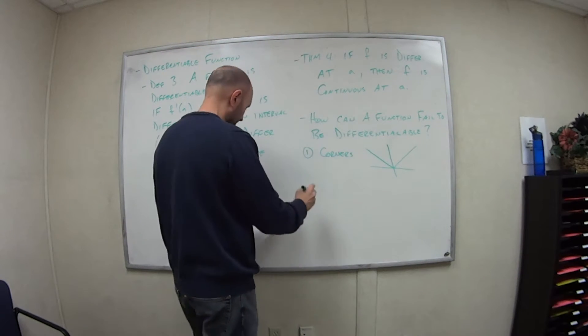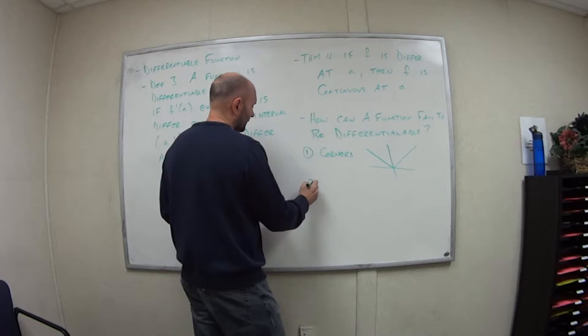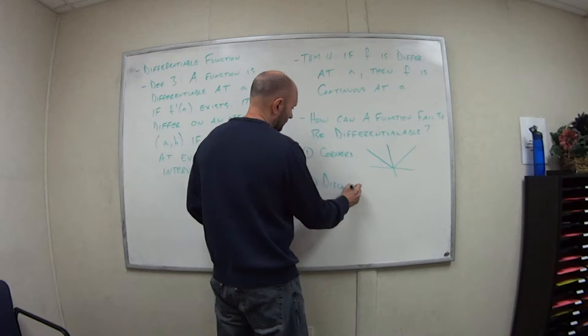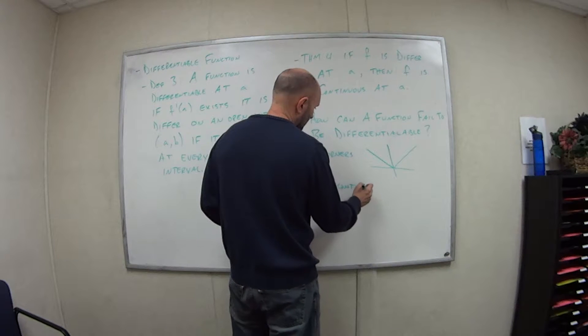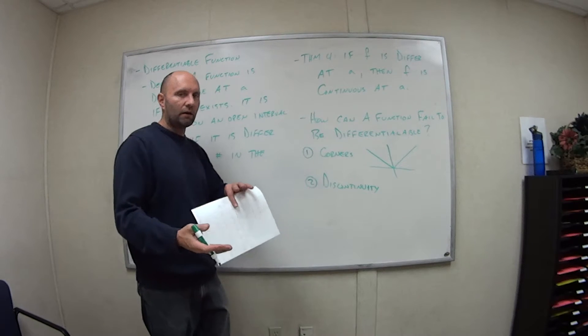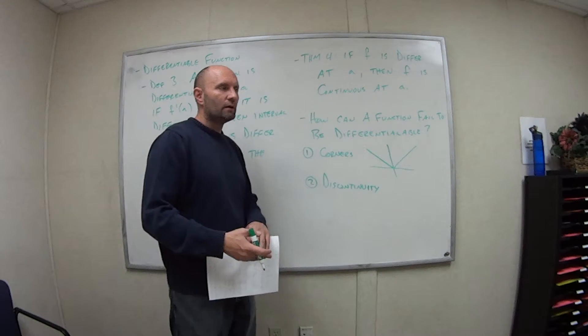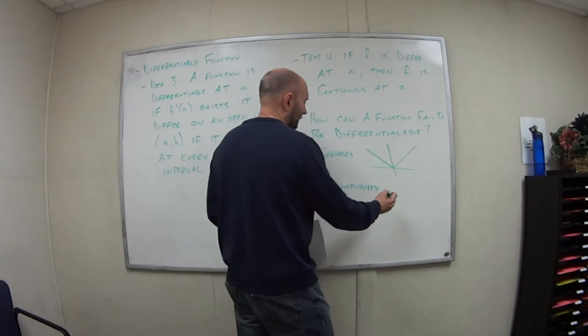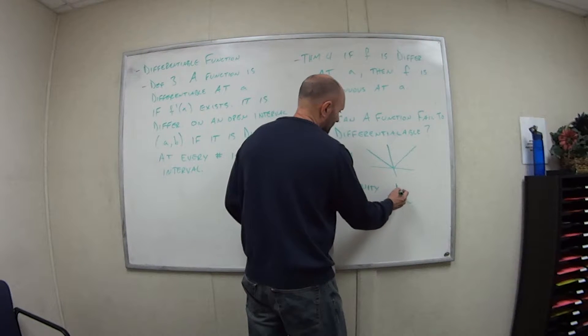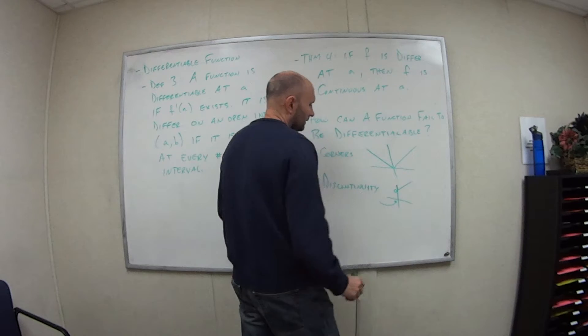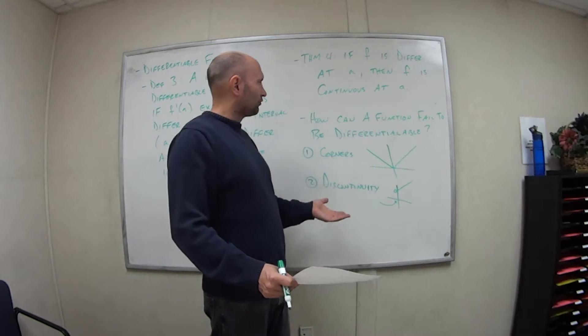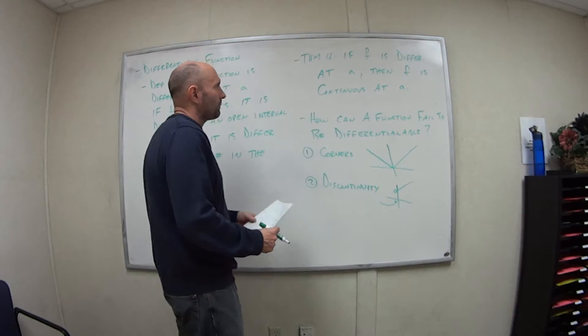The other is discontinuity. So we have these different types, right? We had jump continuity, we had the hole. So for example, if I have a graph that looks like this, obviously at this point there's no tangent line, so I can't differentiate it at that point.